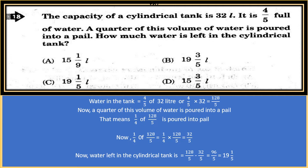One fourth of 128/5 is poured into a pail. So, 1/4 × 128/5 = 32/5. Water left in the cylindrical tank = 128/5 − 32/5 = 96/5 = 19 and 1/5 litres. So, the correct option is C.